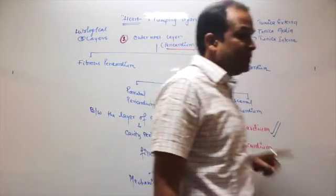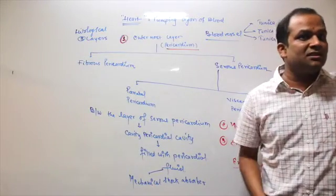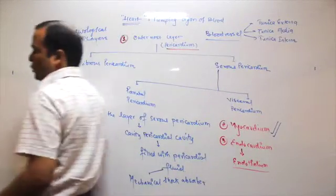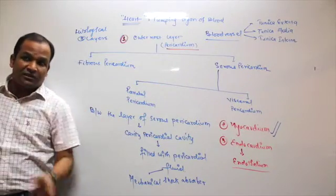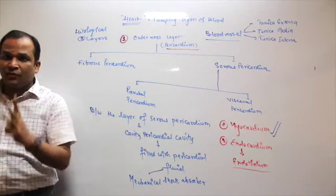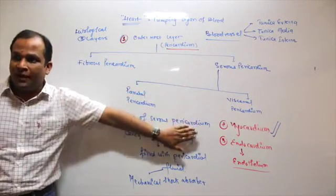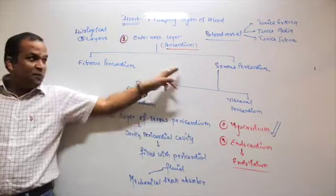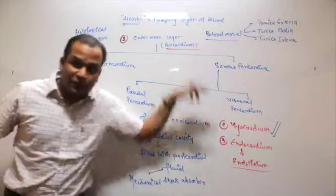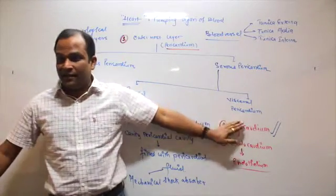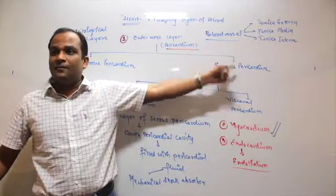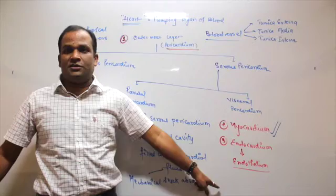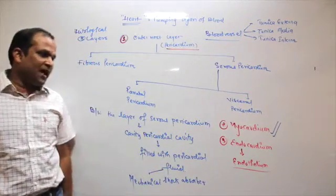Where is the heart situated? It is situated in the mediastinal space of the thoracic cavity — the space present between the lungs. The heart is made up of three histological layers: pericardium, myocardium, and endocardium. Pericardium is divided into fibrous and serous. Serous is further divided into parietal and visceral. Between the visceral and parietal layers is the pericardial cavity, filled with pericardial fluid, which functions as a friction reducer and mechanical shock absorber. The thickest layer is myocardium because the main function is pumping.